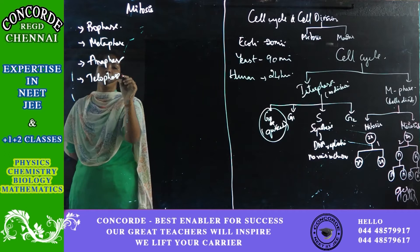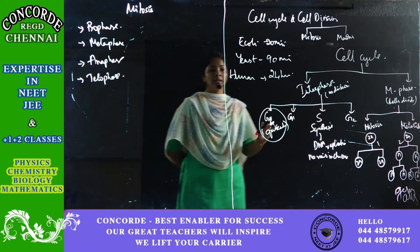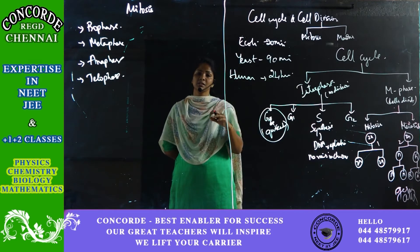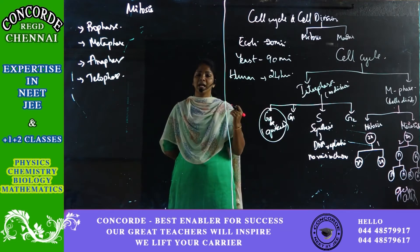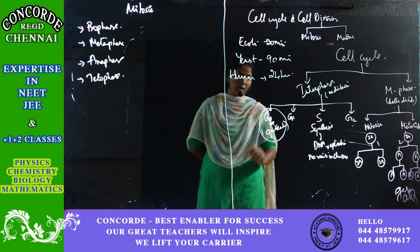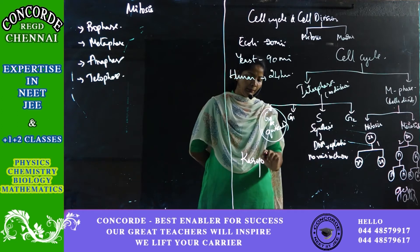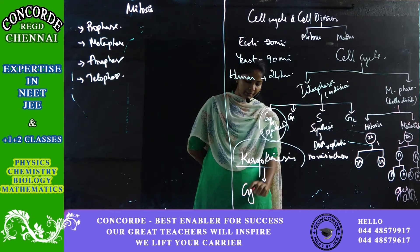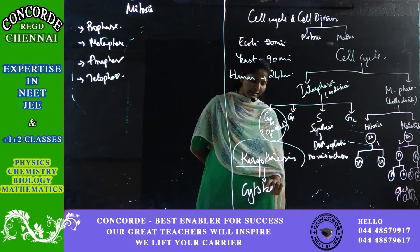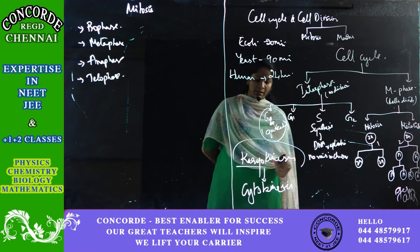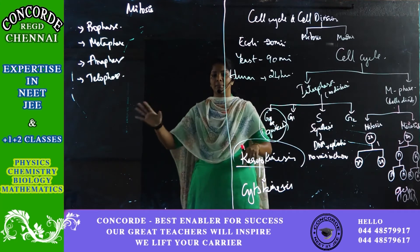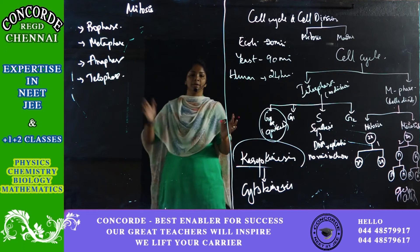All cell divisions will start with karyokinesis — that is, first the nucleus splits. The division of the nucleus is called karyokinesis. All my cell divisions will start with karyokinesis and end in cytokinesis, which is the division of the cytoplasm.